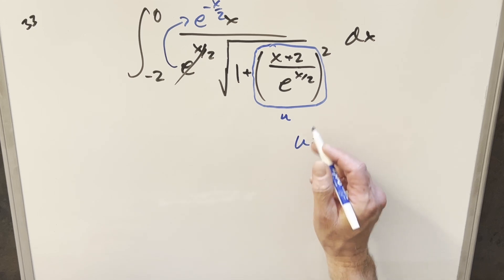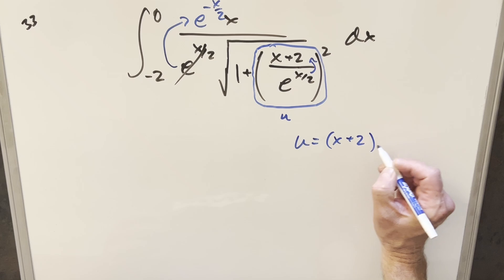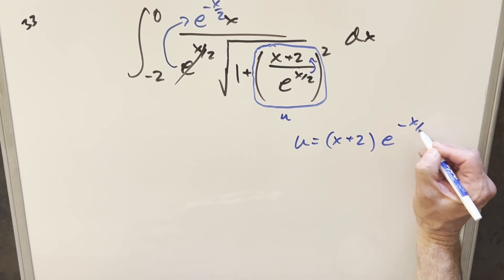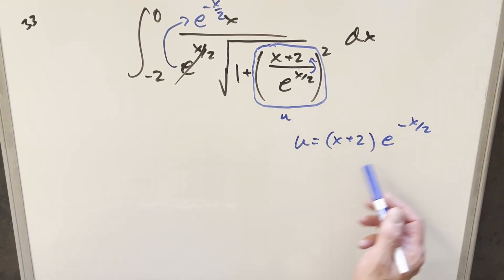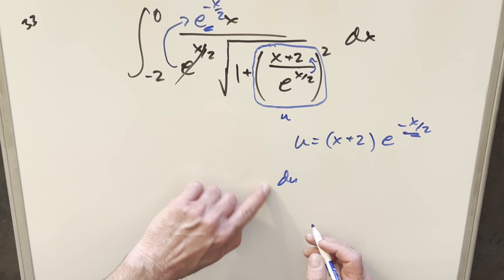So for my u, we can bring this into the numerator here and do our u substitution for (x + 2) times e^(-x/2). The reason I like that is when we take the derivative here, we know the exponent is going to stay the same, so we might get some simplification with that.